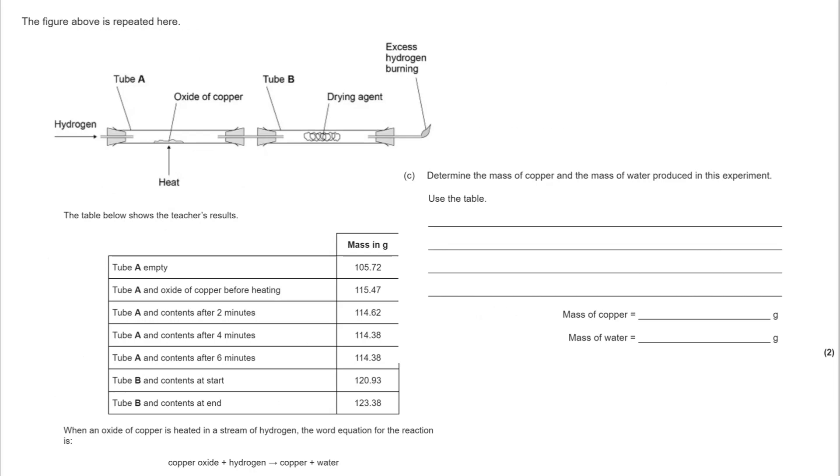Moving on to part C. Determine the mass of copper and mass of water produced using the table. You've got to find the relevant information. In tube A, the empty tube was 105.72 grams. Tube A and contents after 6 minutes, after the oxide of copper has been heated until the mass doesn't change, was 114.38 grams. That tells us there were 8.66 grams of copper left.